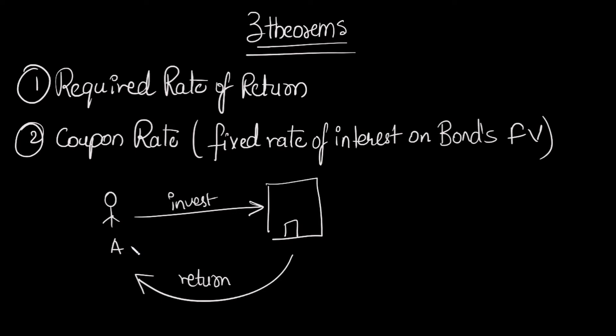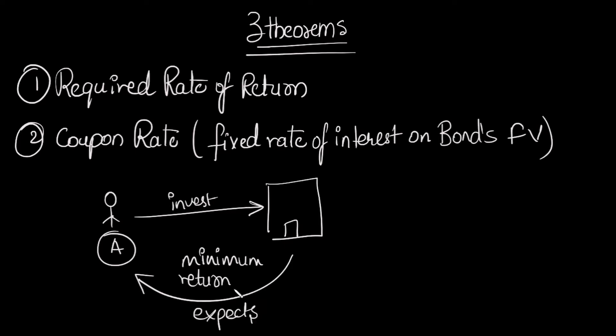The minimum return an investor expects to achieve by investing in a project is called the required rate of return. He is not getting it yet — he is just expecting: if I invest, I might get this much return. So please be careful with these two terms: required rate of return and coupon rate, which can also be called interest rate.